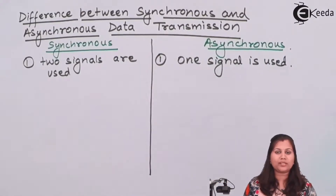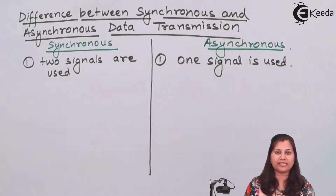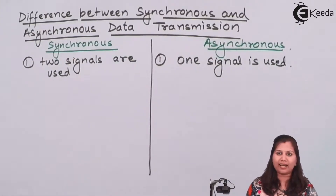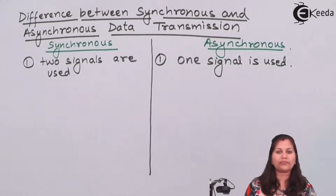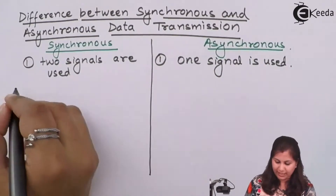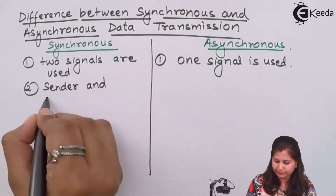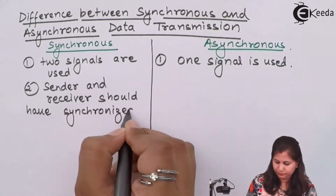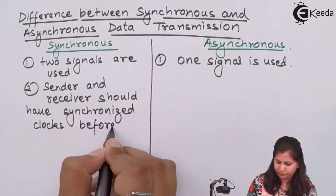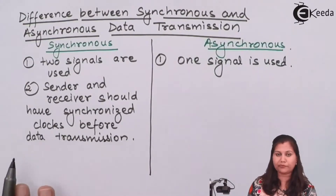Now talking about the synchronization between the sender and the receiver: in synchronous mode the sender and receiver share a single common clock — that clock is common between the sender and receiver. The second difference is that the sender and receiver should have synchronized clocks before data transmission.